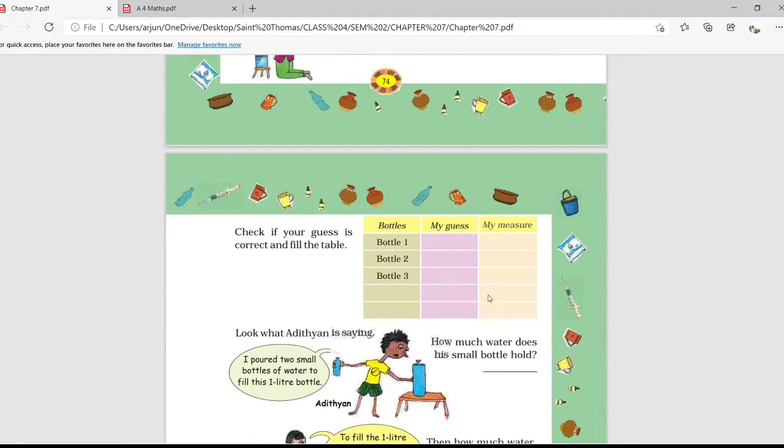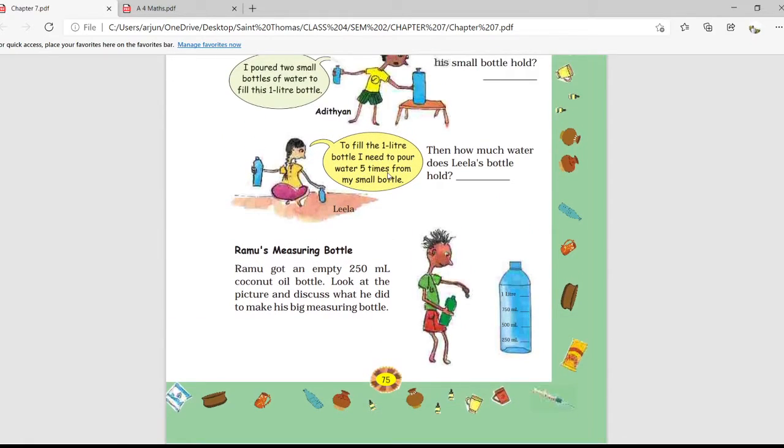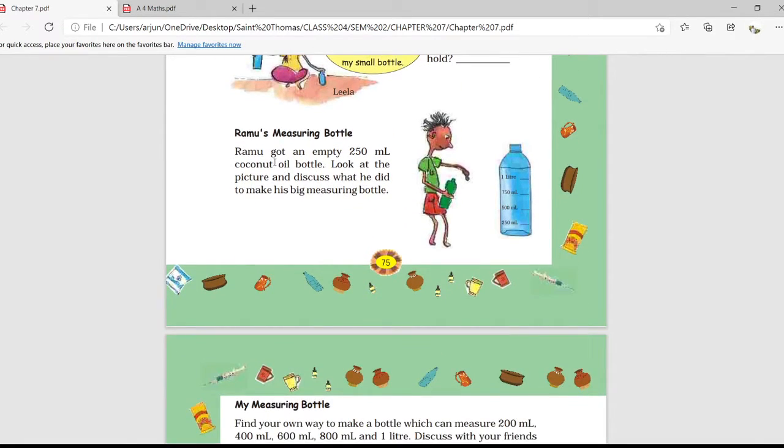So in that we have seen one activity. Then we have seen the conversation between Adityan and Leela. They have tried to pour or to fill one big bottle by the beans of the bottle which they are having. In that we have seen how many times we needed small amount of water to get whole one liter of bottle.